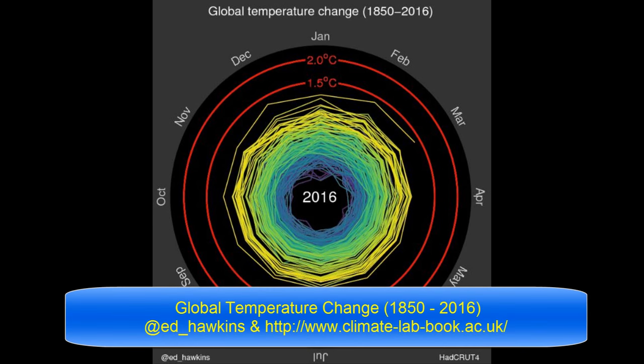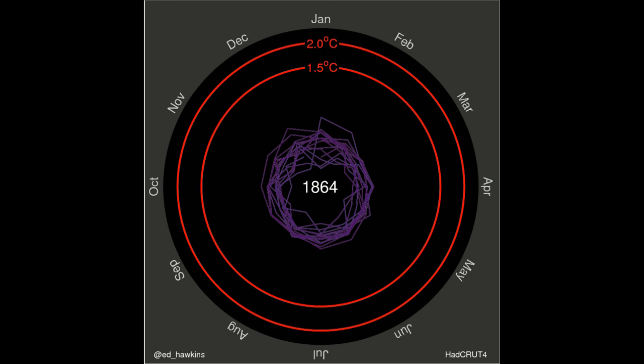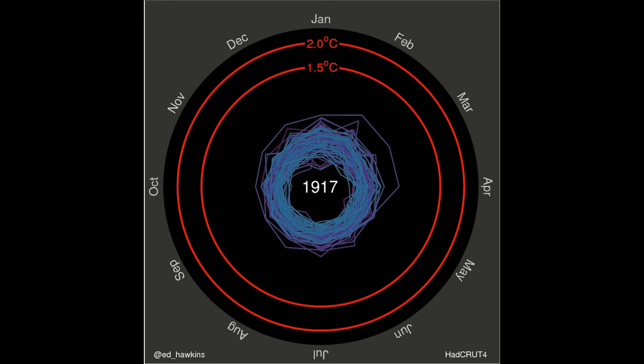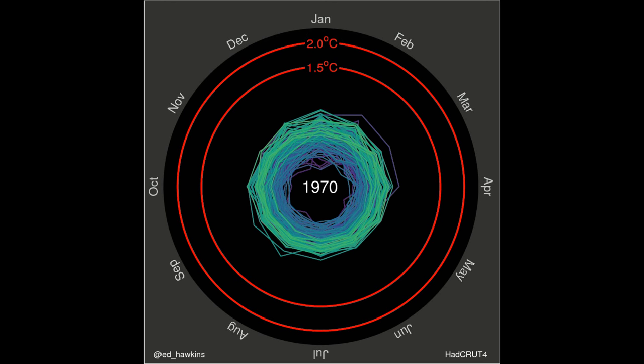Well hello everybody, Smithy here and today we're going to take a look at this fantastic spiralling global temperatures chart. This was done by Ed Hawkins at the Climate Lab Book AC UK and this is playing in normal time. You can see it goes from 1850 all the way through to April 2016 and from the spiral it looks really cool, going outwards and outwards up towards 1.5 degrees C. So let's go and take a look at this another way.